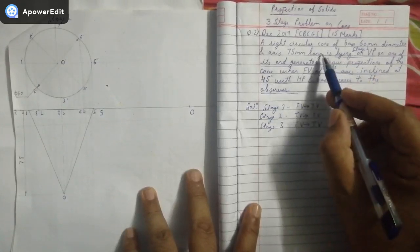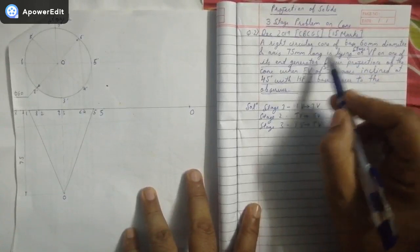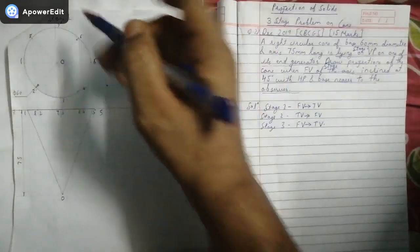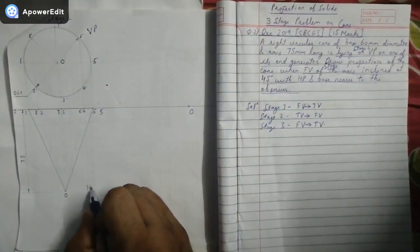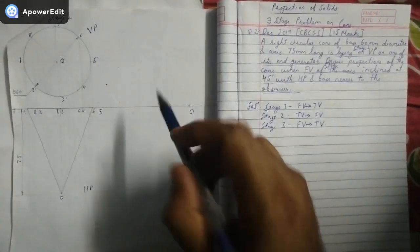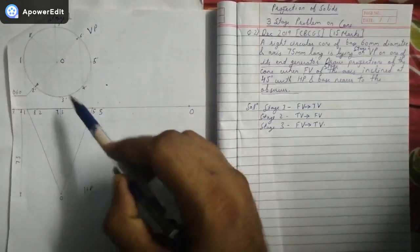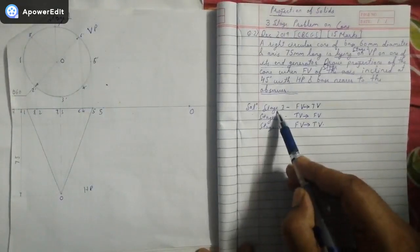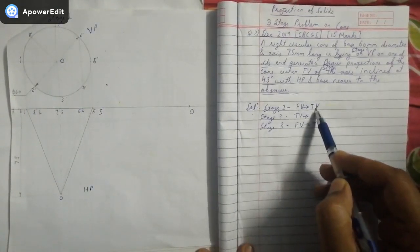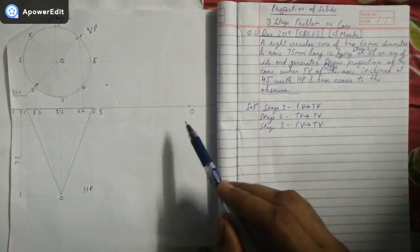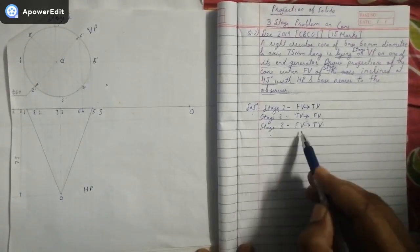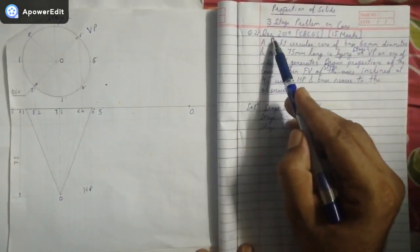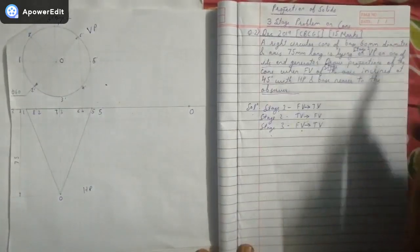This is stage number two directly — a cone will be lying on an end generator on a particular plane only when in stage one it is kept on the same plane. This is the vertical plane, this is the horizontal plane, and this is the XY line. For this problem we will be starting with the front view and top view. This is a university problem for 15 marks — Question 2, December 2019 CGS.